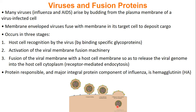For influenza, the protein responsible for this interaction is called hemagglutinin, or HA for short. This is a well-studied protein, so we'll look at it as our model for how viral proteins infect cells.